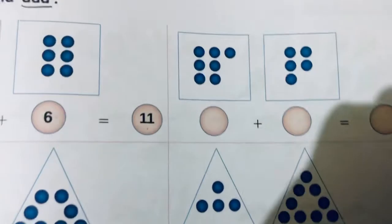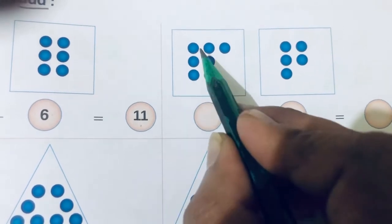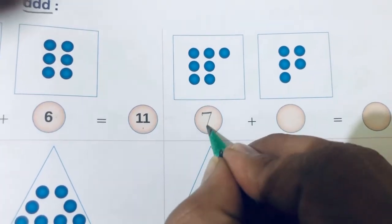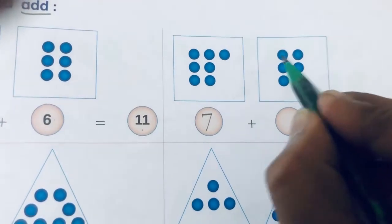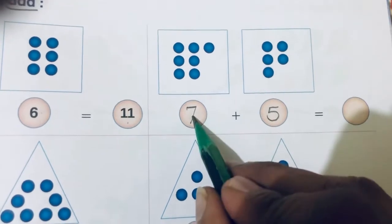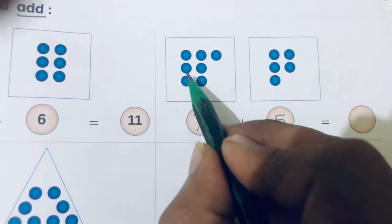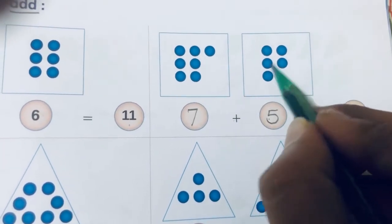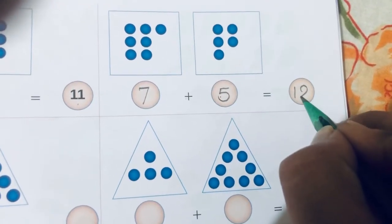Count how many circles are here: one, two, three, four, five, six, and seven — so here you will write seven. Then count how many circles are here: one, two, three, four, five — so you will write five. Now seven plus five: count all together — one, two, three, four, five, six, seven, eight, nine, ten, eleven, twelve. So your answer will be twelve.